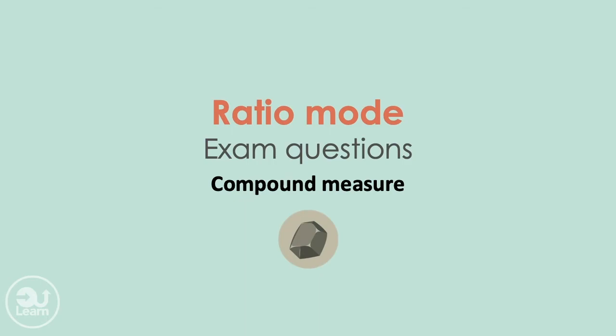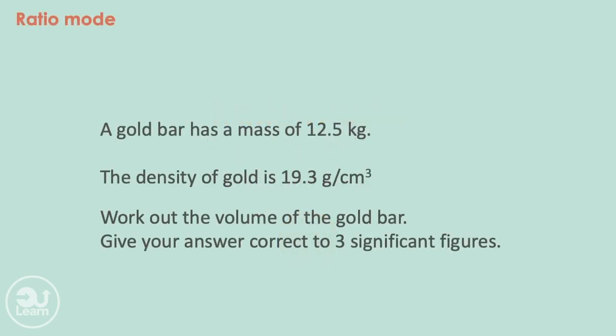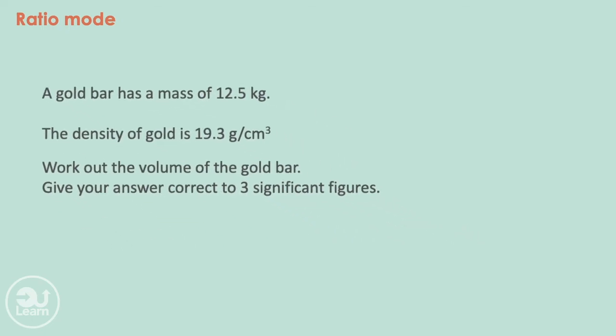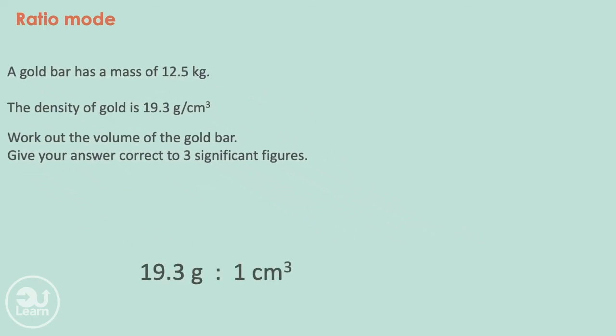Moving on to compound measures that can be used with this mode. Compound measures can be difficult, but are easily solved with this mode. A gold bar has a mass of 12.5 kilograms. The density of gold is 19.3 grams per centimeter cubed. Work out the volume of the gold bar. Give your answer correct to three significant figures. Let's first represent our information as equivalent ratios. The density is 19.3 grams for every centimeters cubed. So the first ratio would be 19.3 grams to 1 centimeter cubed. This is equivalent to 12.5 kilograms to our unknown volume. What we do next is convert our mass of 12.5 kilograms to grams by multiplying 12.5 by 1000, giving us 12,500 grams. So now we replace 12.5 kilograms with this amount.